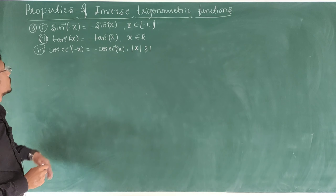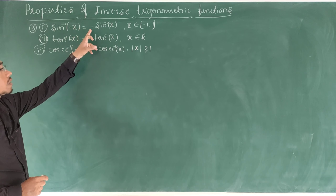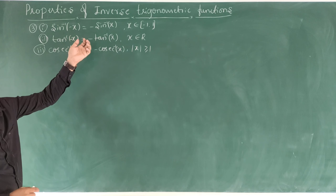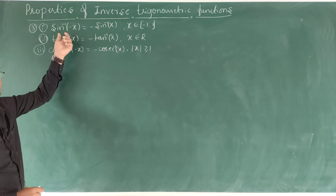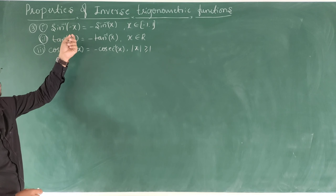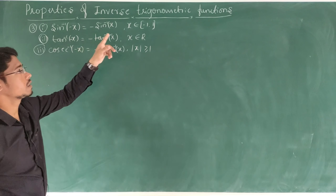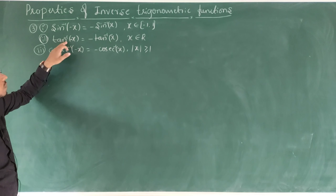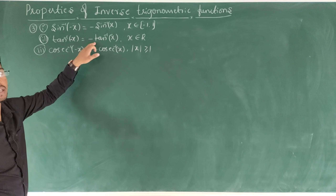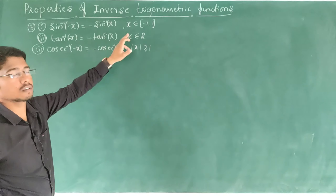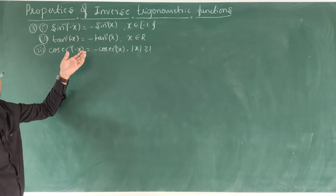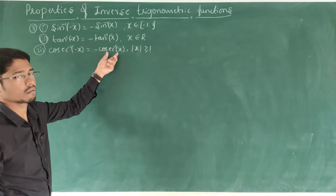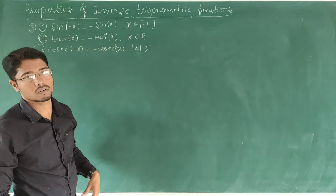See the next properties. Sin inverse of minus x equals minus sin inverse x. This is like sin of minus theta equals minus sin theta — in inverse trigonometry, sin inverse of minus x equals minus sin inverse x, when x belongs to [-1, 1]. Second: tan inverse of minus x equals minus tan inverse x, for x belonging to R. And cosec inverse of minus x equals minus cosec inverse of x, when mod x ≥ 1.